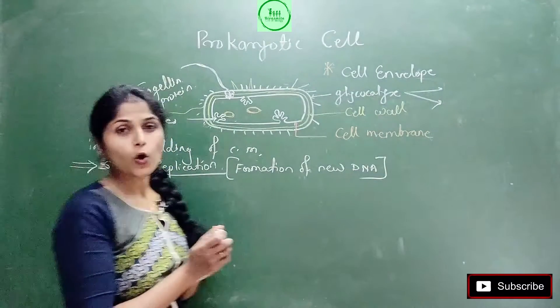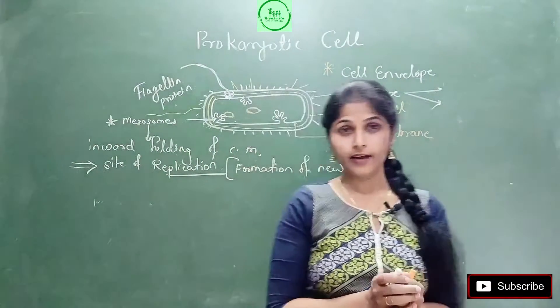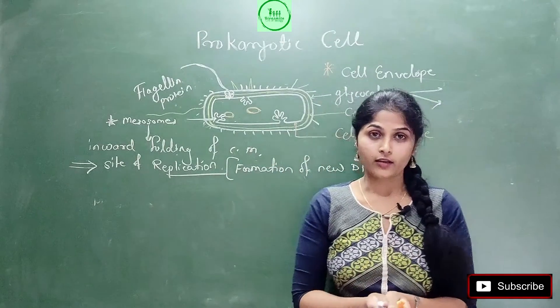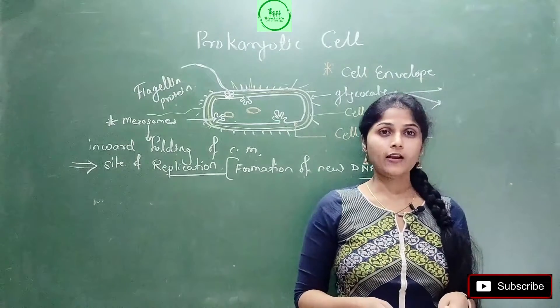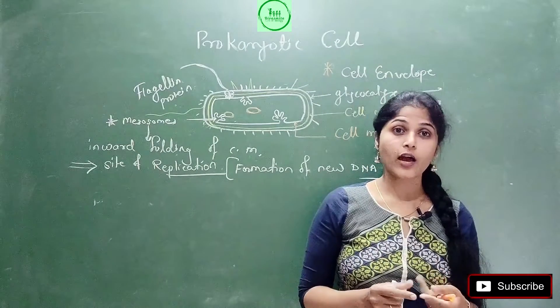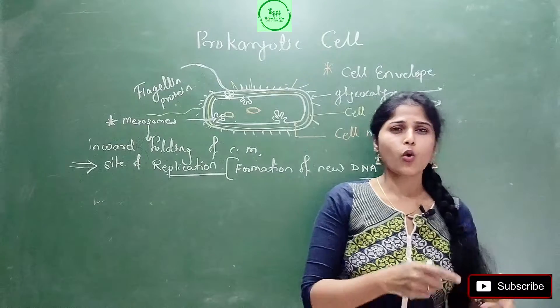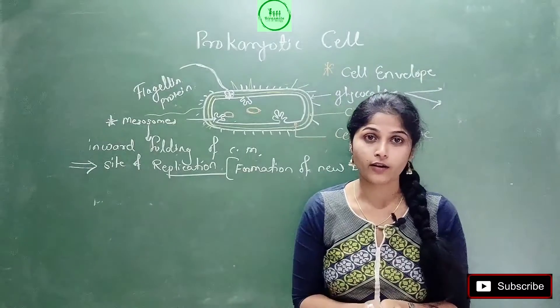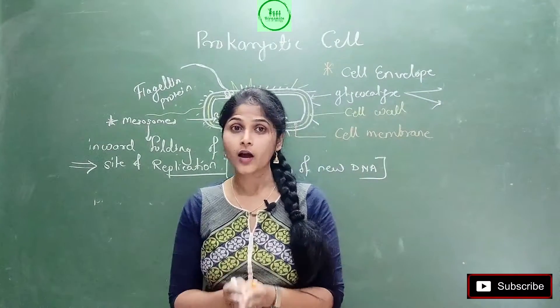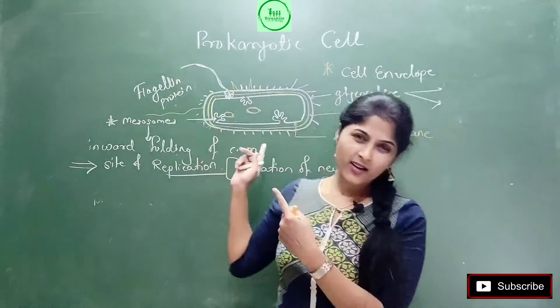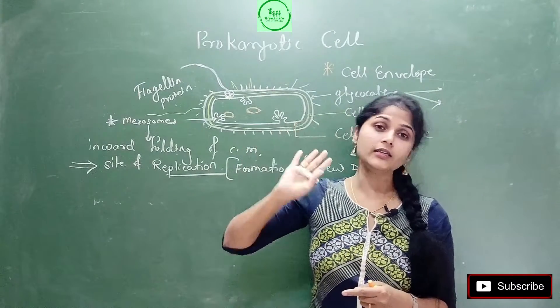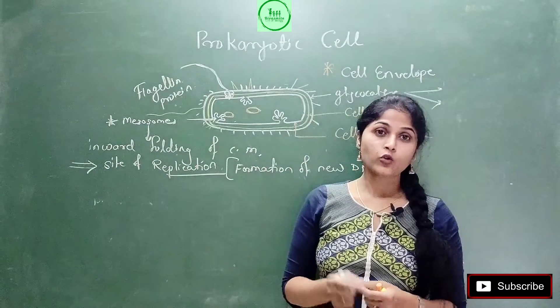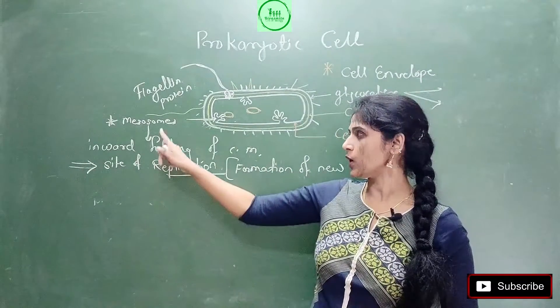Now next function. Prokaryotic cell means undeveloped cell, right? And eukaryotic means developed. Reason - we are having developed cell organs. Inside our cell there is the presence of mitochondria, Golgi body, ribosomes - there are many cell organs. One of the important, we can say, mitochondria, which we call the powerhouse of the cell. Bad luck of prokaryotic bacteria - there is no mitochondria. If there is no mitochondria, then where is energy?